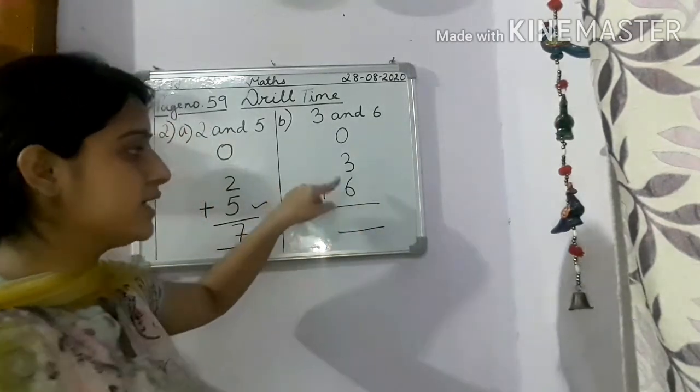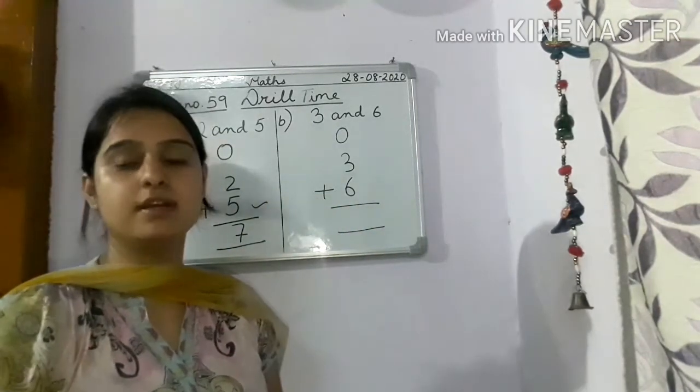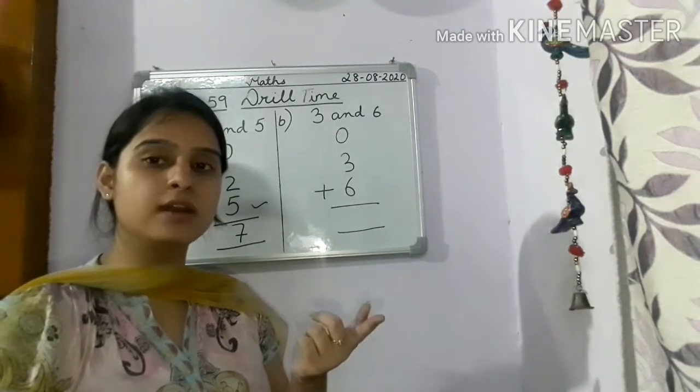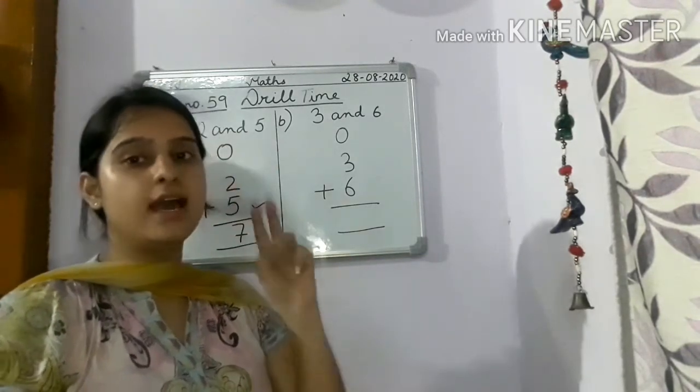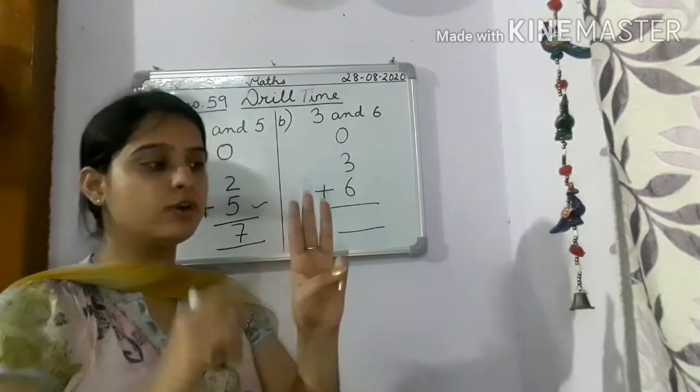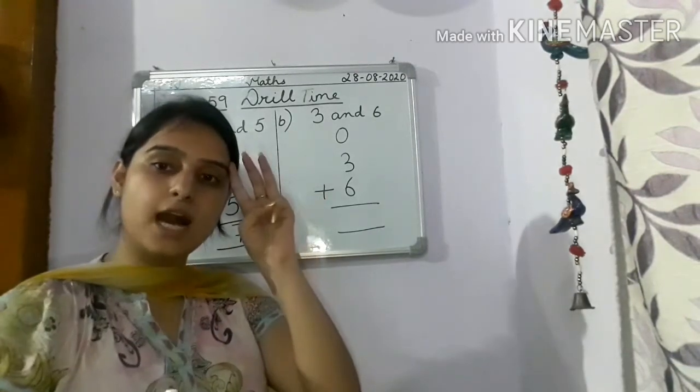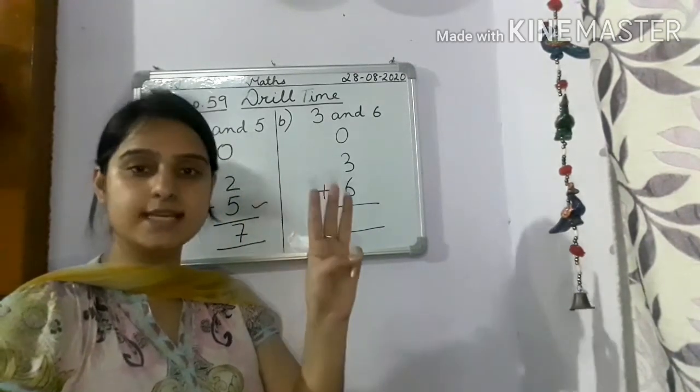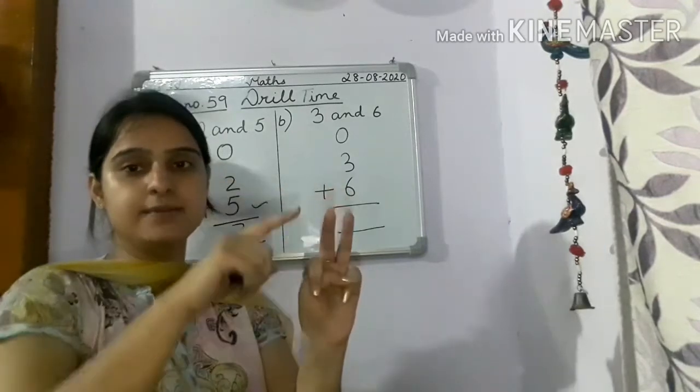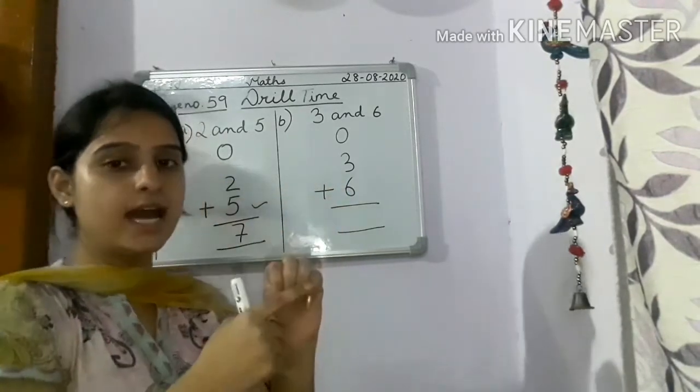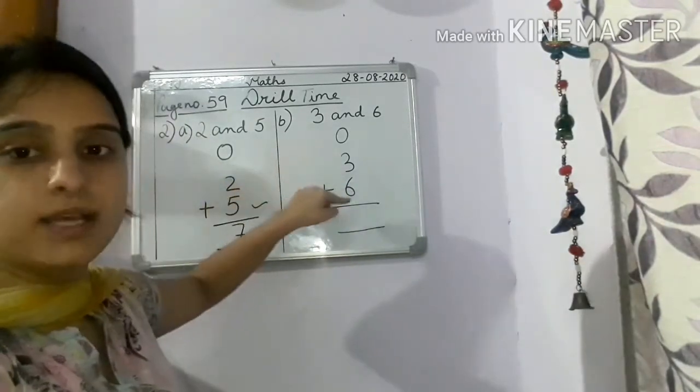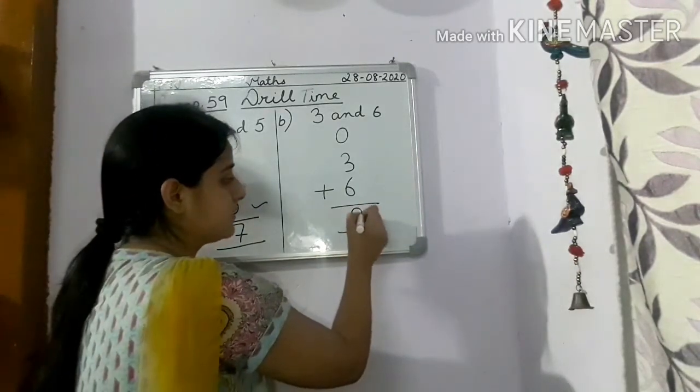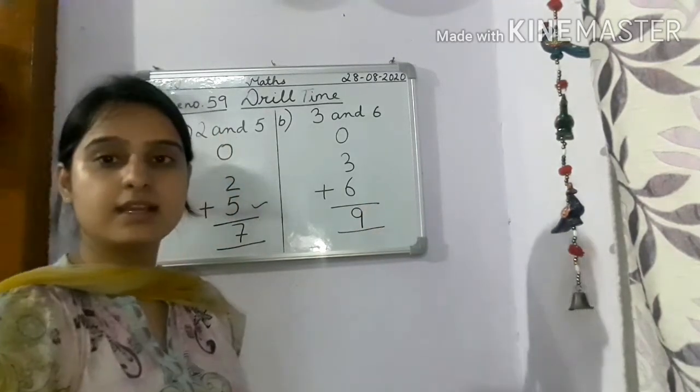So which one is the bigger number? 6 is the bigger number. So bigger number we will keep there in mind, and 3 fingers will open for the smaller number. So we will start counting after 6. 7, 8, 9. So children, 3 plus 6 is what? 9. Clear?